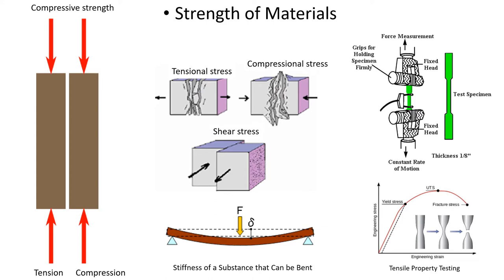Stiffness is expressed by the Young's modulus of the material, basically the relationship between force and deformation. In general, blades are very flexible, stronger in the flapwise direction and weaker in the edgewise direction. This is the reason for the use of composite materials. For a given Young's modulus, the material with the lower density is the composite — resin plus glass fiber. This relationship can be seen graphically in a type of graphic called an Ashby plot.